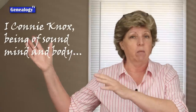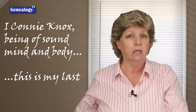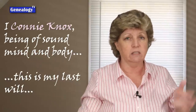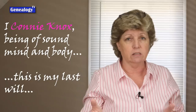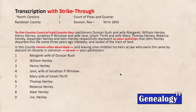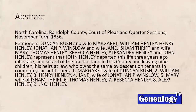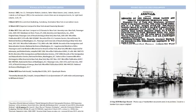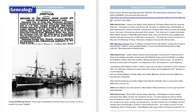For example: 'I, Connie Knox, being of sound mind and body, this is my last will and testament.' The only thing of genealogical value in that sentence is Connie Knox. So we can get rid of all the boilerplate stuff in a will — that's the abstracted part. We take the abstracted part and put it into our research notes, and we keep our research notes in chronological order.